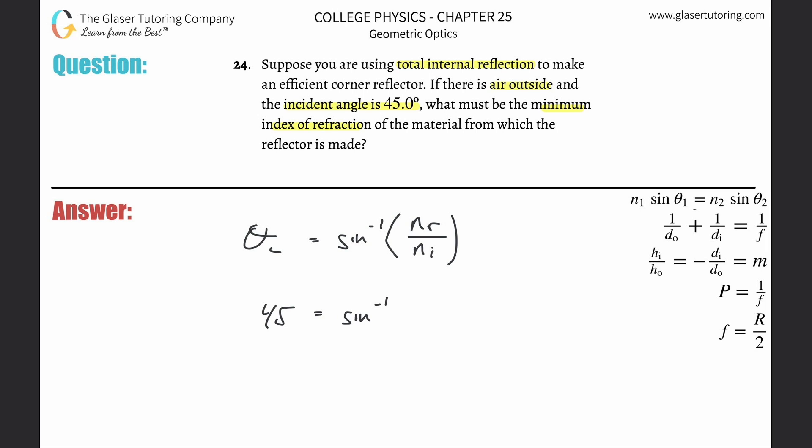That's going to be equal to the inverse sine of the refracted ray, which is the index of refraction of the part experiencing the total internal reflection. Another way to remember it is that n sub r, the index of refraction of the refracted ray, must be less than the index of refraction of the incident ray.